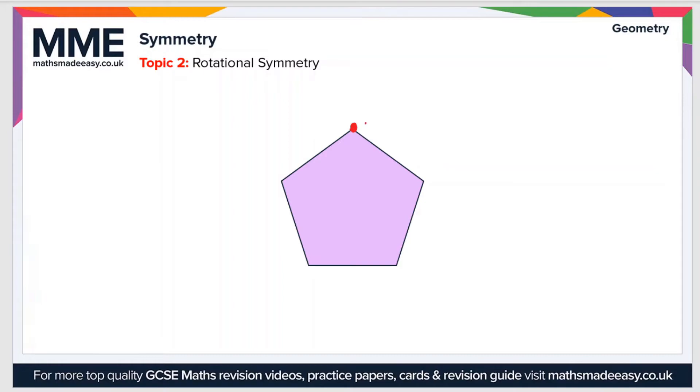If we rotate it so that this point maps onto this point, that's one rotation, and then we can do the same. There's two rotations, three rotations, four rotations, and then finally there are five rotations.